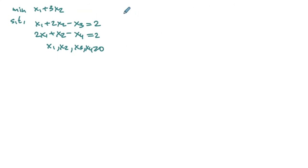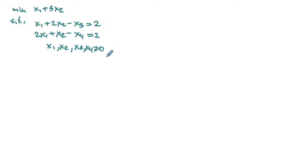If we tried to solve this using the simplex method, our default starting solution wouldn't work. We couldn't start with the origin because if we select x3 and x4 as the initial basic variables, the corresponding basic solution would be infeasible. So let's see what happens when we consider the dual LP instead.